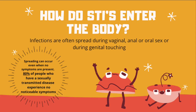So how do you get a sexually transmitted infection — how do they enter the body? Infections are often spread during vaginal, anal, or oral sex, or even during genital touching. You may not be having sex or oral sex, but your genitals could be touching and they could spread that way. Spreading can occur even when no symptoms are present — someone may think they don't have an STI and engage in sexual activity, not knowing they're passing it on.